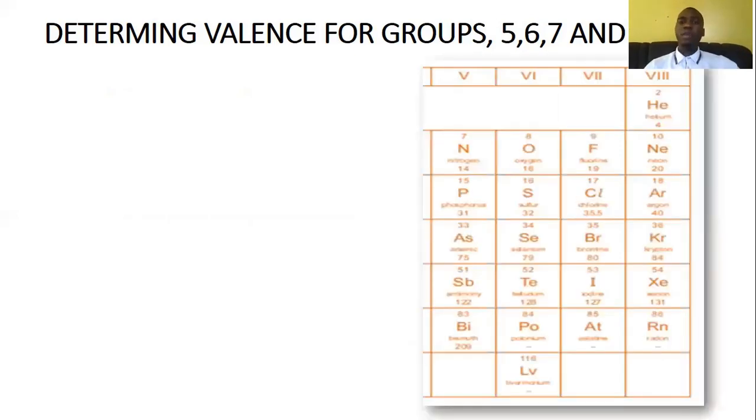Let's look at determining valence for groups five, six, seven, and eight. So determining the valence for these groups, it also has the same rule. Now, that rule will be given in form of a formula. Before we do that, let's just have a recap. These are the groups. As you can see, in Roman numerals, we have group five, group six, group seven, and group eight, which is also called group O. Be sure you know the reason why it is called group O.